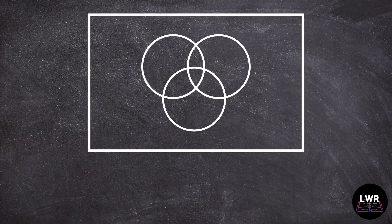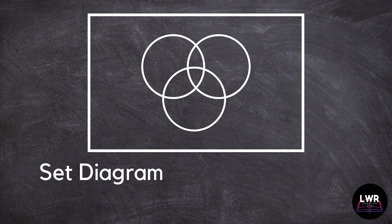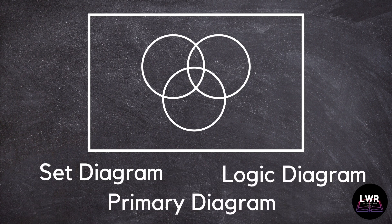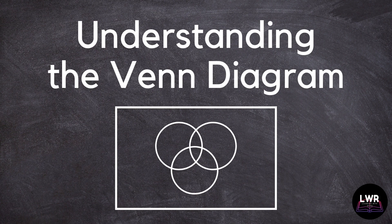Have you seen an illustration with overlapping circles like this? Are you familiar with the terms set diagram, logic diagram, or primary diagram? These three terms are the other names for this famous illustration that shows the logical relationship between and among a finite collection of sets, as well as its cardinality, or the number of elements in each set.